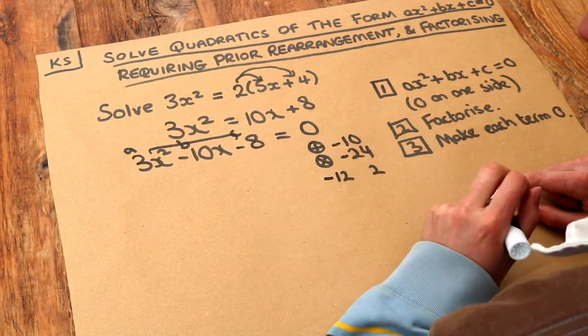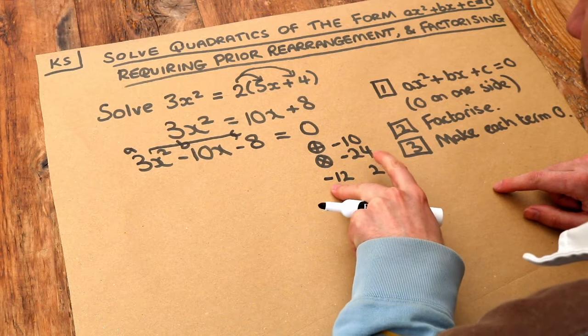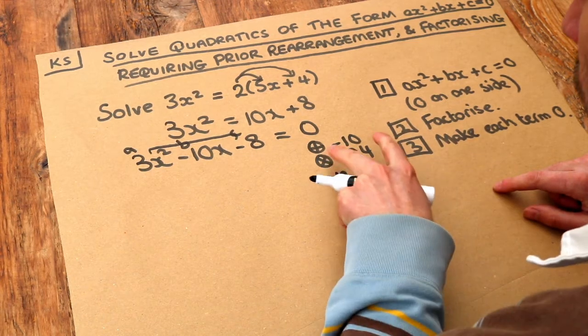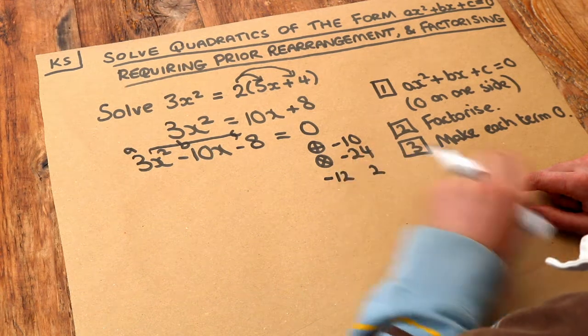Now if you were to make this one minus, then when you add them, minus 12 plus 2 would be minus 10, which is right. And when you multiply them, minus 12 times 2 is minus 24. That's right.